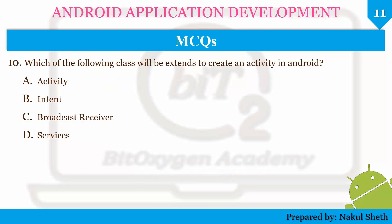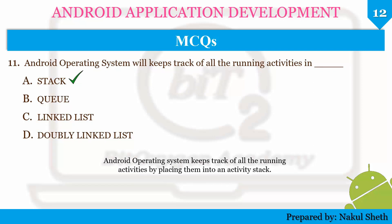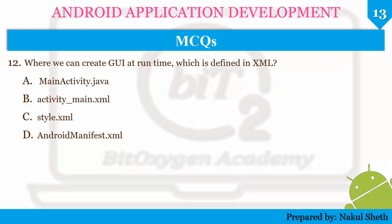Next question: which of the following class will be extended to create an activity in Android? The options are Activity, Intent, BroadcastReceiver, and Services. The correct answer is Activity. Next question: Android OS will keep track of all running activities in a stack, queue, linked list, or doubly linked list? The correct answer is stack, because Android OS keeps track of all running activities by placing them into a single activity stack.